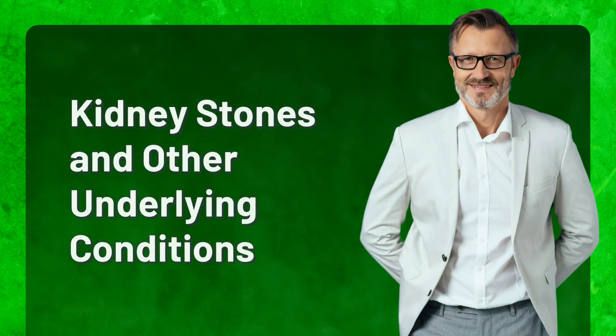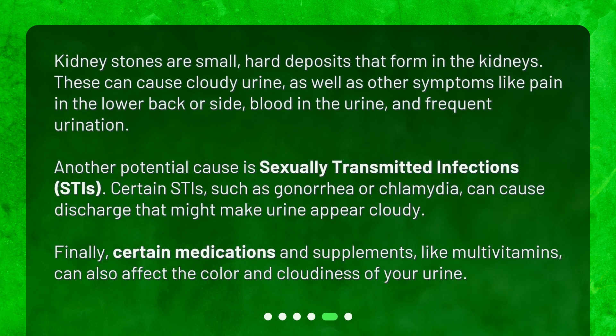Kidney stones and other underlying conditions. Kidney stones are small, hard deposits that form in the kidneys. These can cause cloudy urine, as well as other symptoms like pain in the lower back or side, blood in the urine, and frequent urination. Another potential cause is sexually transmitted infections, or STIs. Certain STIs such as gonorrhea or chlamydia can cause discharge that might make urine appear cloudy. Finally, certain medications and supplements, like multivitamins, can also affect the color and cloudiness of your urine.